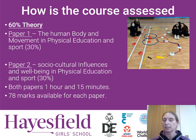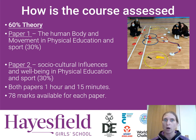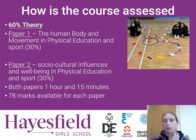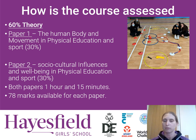The second paper is completely different. It's called socio-cultural influences and well-being in physical education and sport, and it looks at sports psychology — how and why we learn skills. It looks at the role that sport has in society, the reasons why people do take part in sport, and perhaps some of the influences and reasons why they don't. Both papers are worth 78 marks, both take an hour and 15 minutes, and both are sat at the end of year 11. They're not taken on the same day, so students can prepare for one paper first and then sit the second paper a few days later.